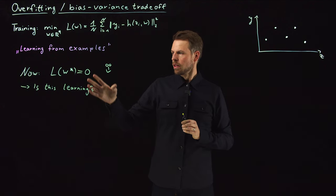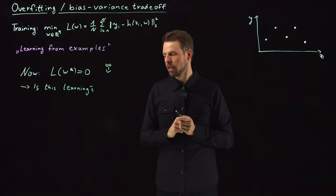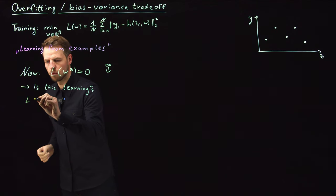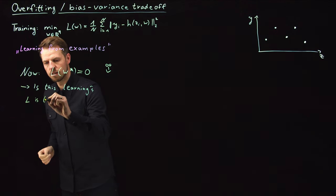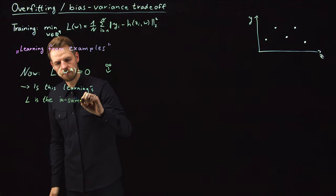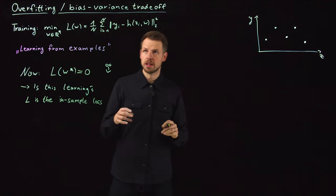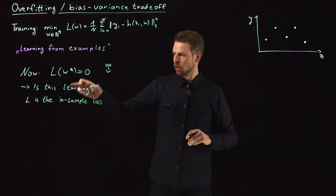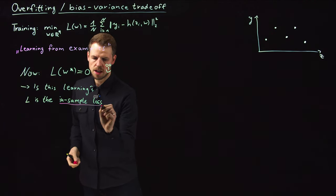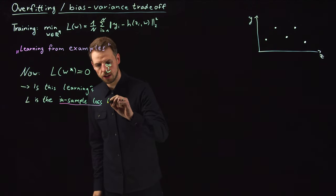But if you think about this, this is actually only memorizing data. What we have done is, we have minimized L, which is the in-sample loss. We have a sample of training data of size N. We have minimized what we call the in-sample loss, also called the empirical loss.